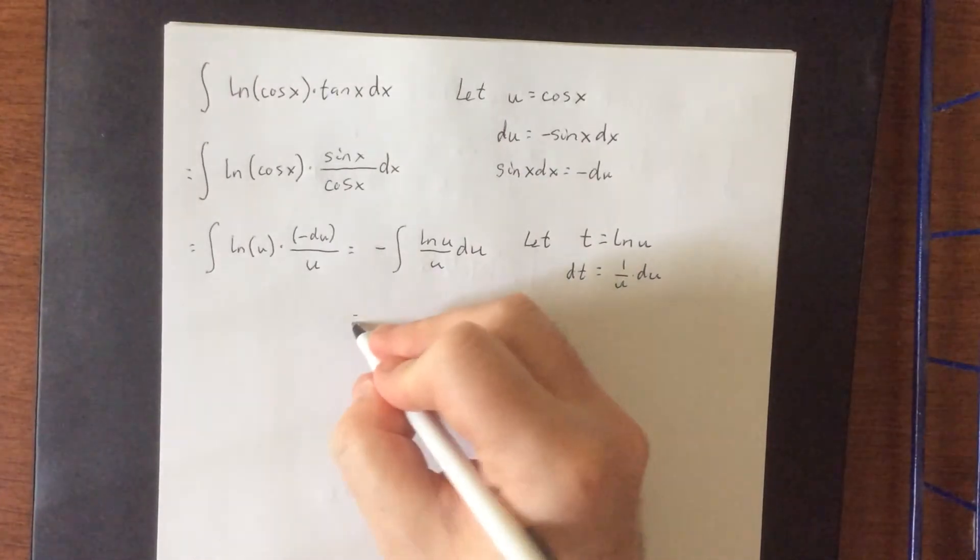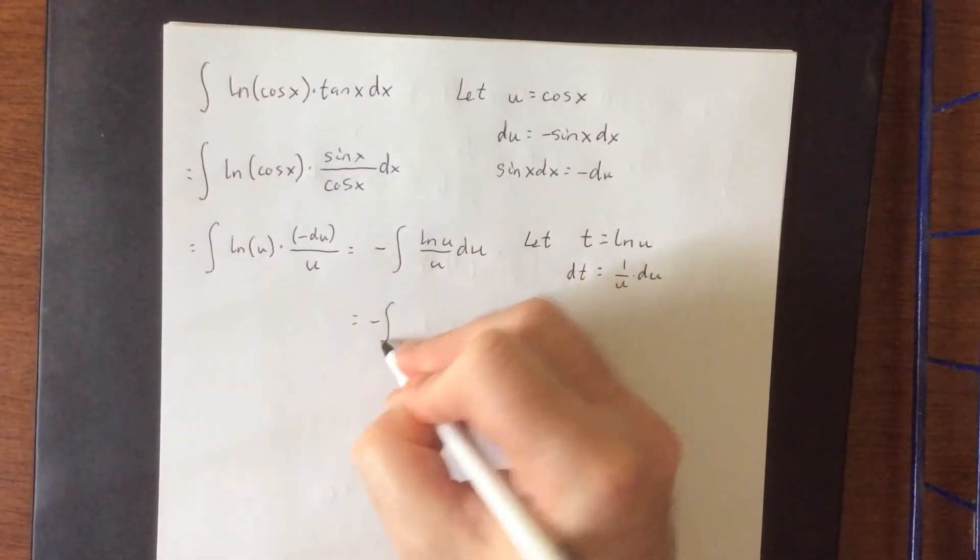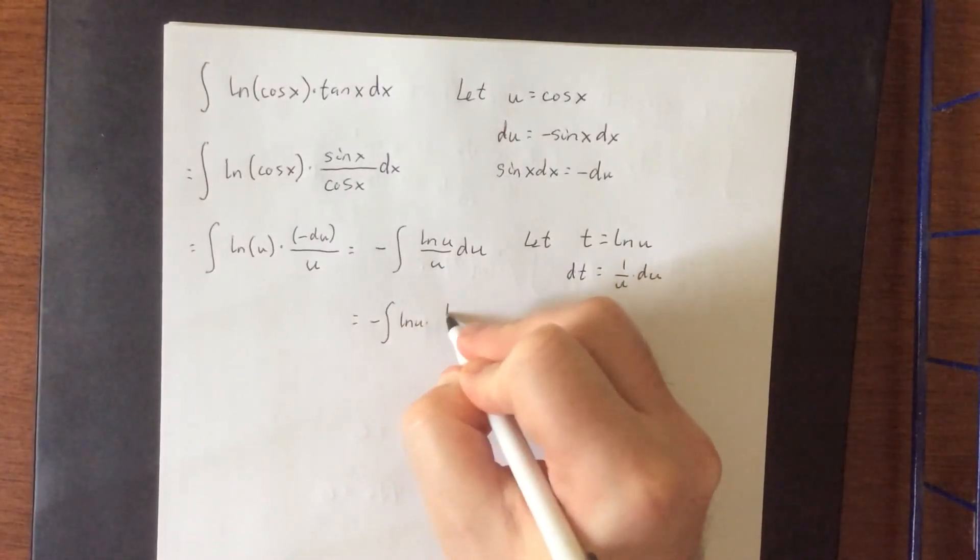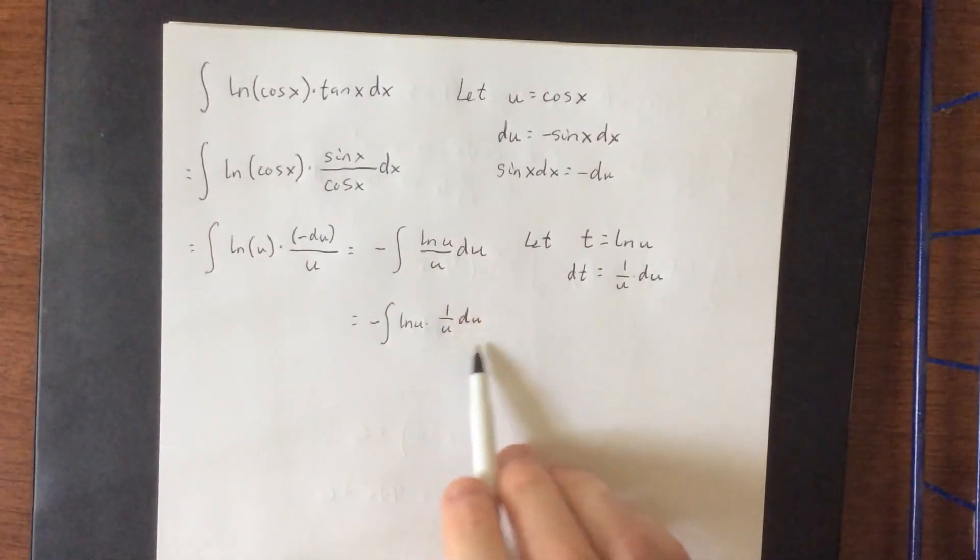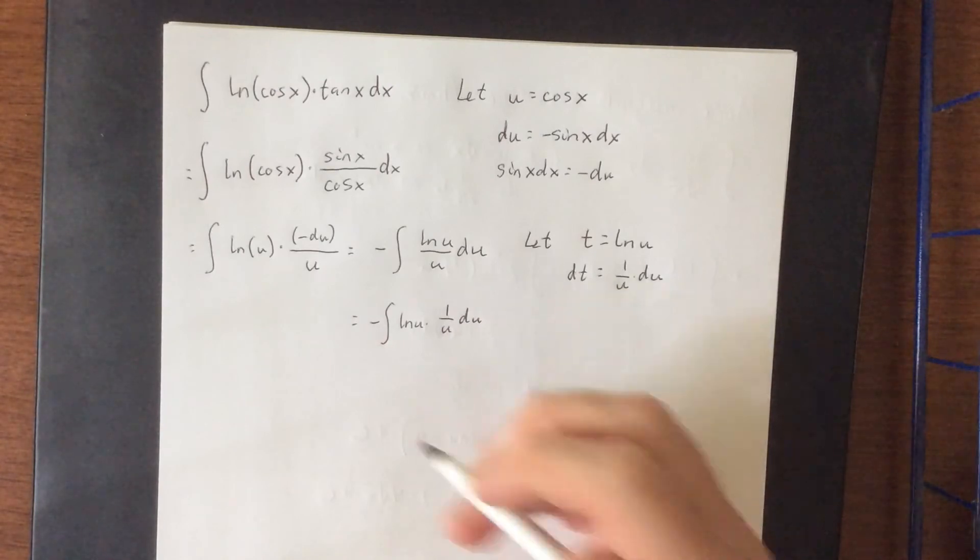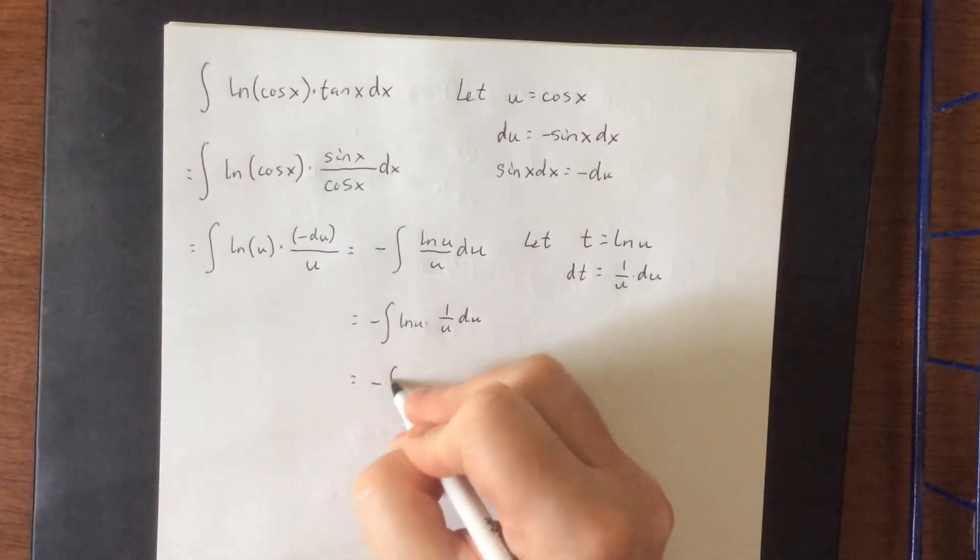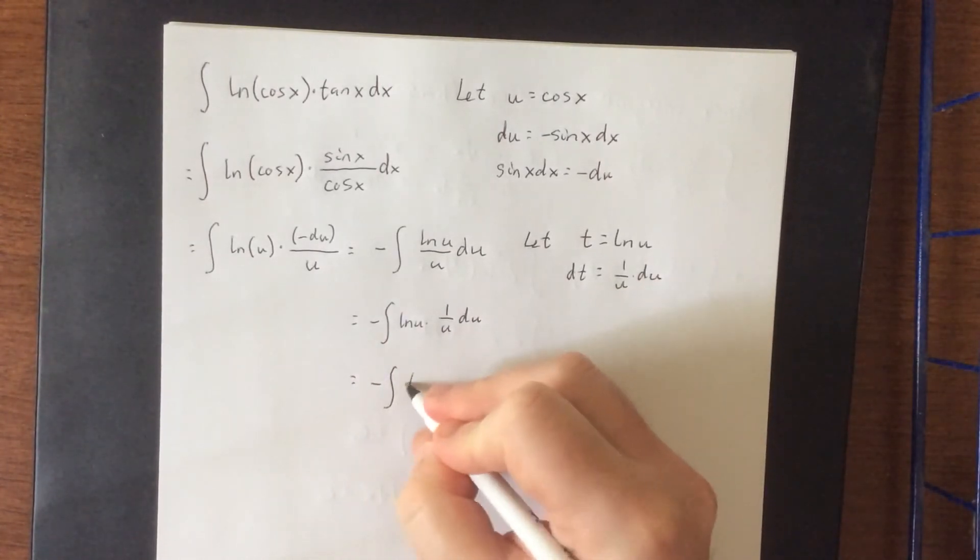Now conveniently, we can rewrite this integral as negative integral of natural log of u times 1 over u times du. That way we can group these two guys together, 1 over u times du, and call that dt. The natural log of u then would simply become t.